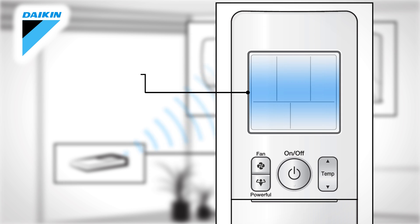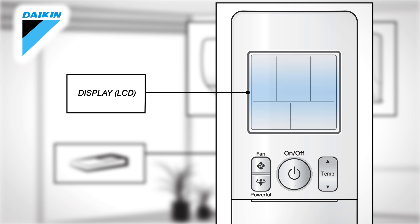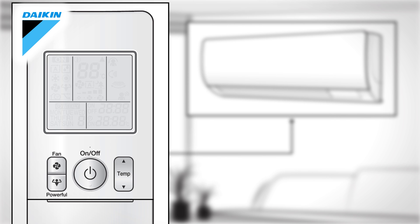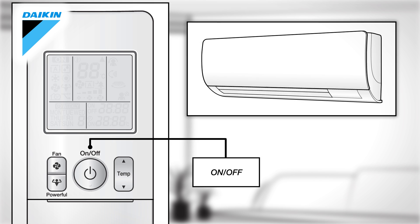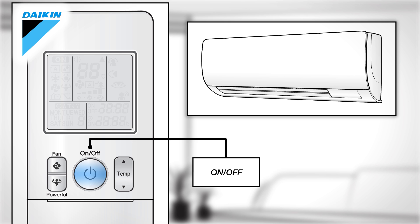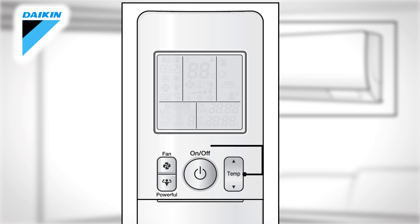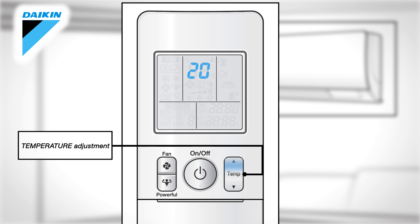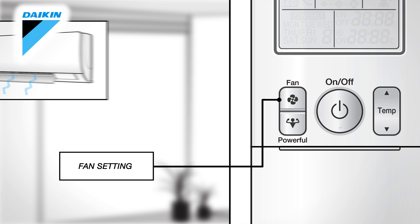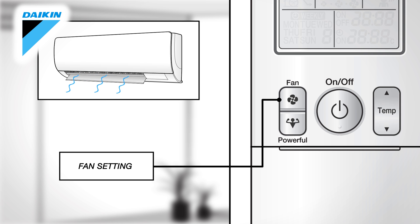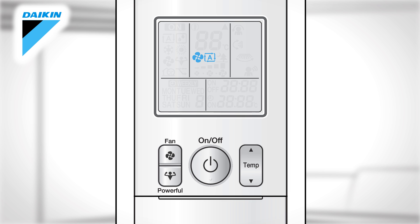Display: This displays the current settings. On/Off: Press this button once to start the operation and press once again to stop it. Temperature Adjustment: Press the button to change the temperature setting up or down. Fan Setting: This selects the airflow rate setting. Press it to advance the airflow rate setting in sequence.